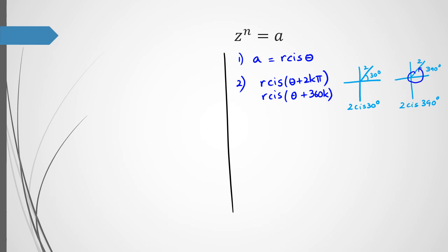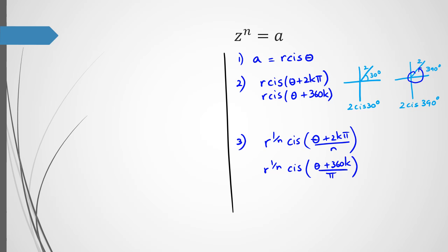Step three is applying De Moivre's theorem. You end up with r to the power of 1/n, cis((θ + 2kπ)/n), or in degrees, r to the power of 1/n, cis((θ + 360k)/n). Step four is to substitute values for k — you go k equals 0, k equals 1, k equals 2, and keep going until you start getting the same answers again.